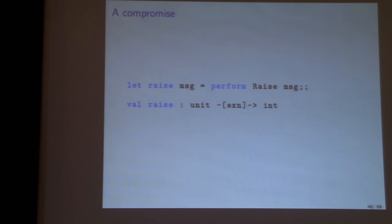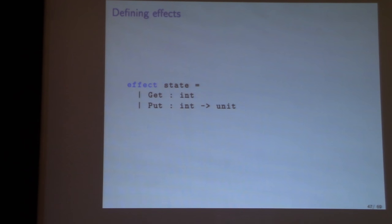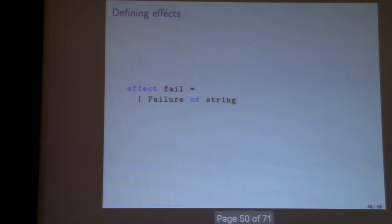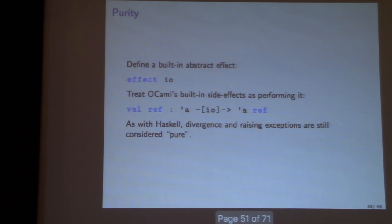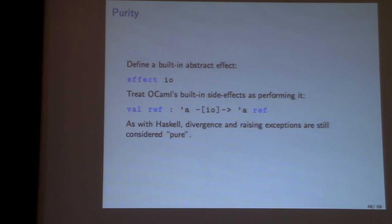Now that the system works, how do we use it? Effect definitions now include types: 'effect State' with operations get (unit to int) and put (int to unit). There's also special syntax for exception-like effects where no continuation is given — so you can use them like exceptions, but now tracked in the type system. We can also make OCaml a pure functional language by defining an abstract IO effect with a default handler and marking all side-effecting operations as doing IO. The normal arrow then means IO, preserving backwards compatibility.